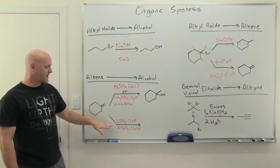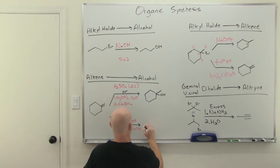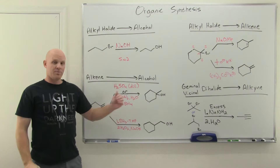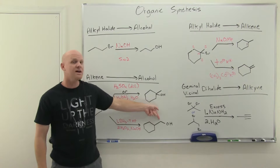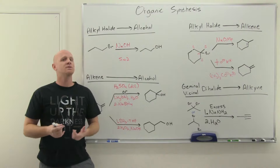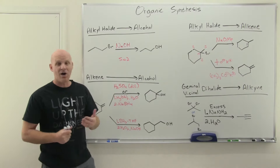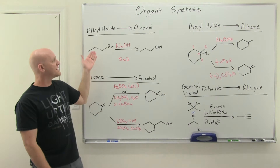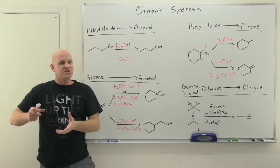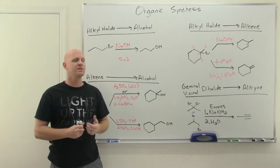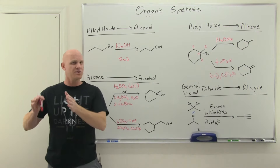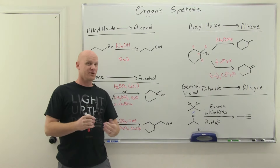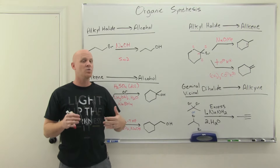Your other option is to go anti-Markovnikov with hydroboration-oxidation, where you add H on the more substituted side and OH on the less substituted side. So to summarize the five major functional group conversions: we turned an alkane into an alkyl halide; alkyl halides into alkenes or alkynes via elimination; and alkyl halides or alkenes into alcohols. Recognizing these functional group interconversions is the first step in organizing your reactions — you'll need to keep these organized by functional group as you learn more throughout the semester.